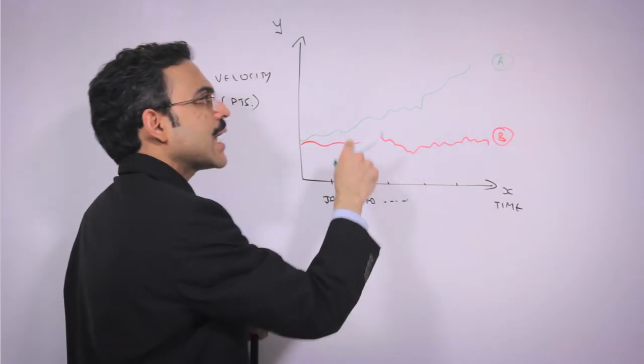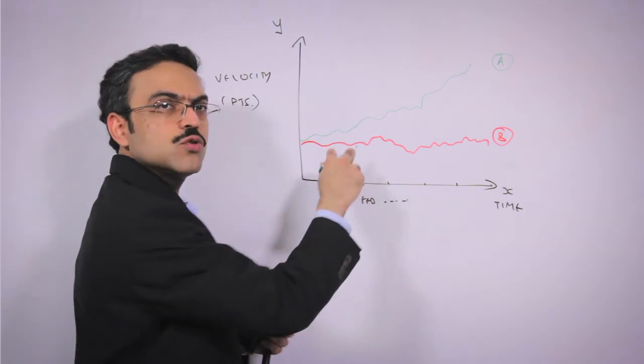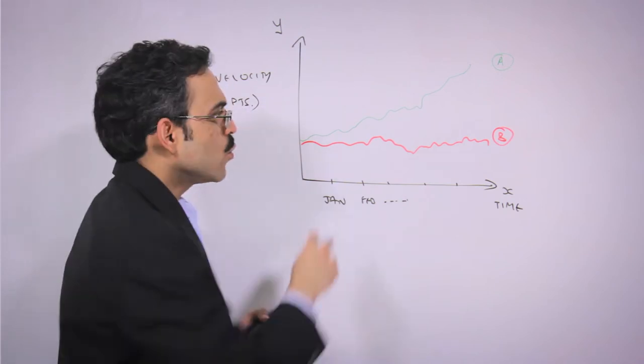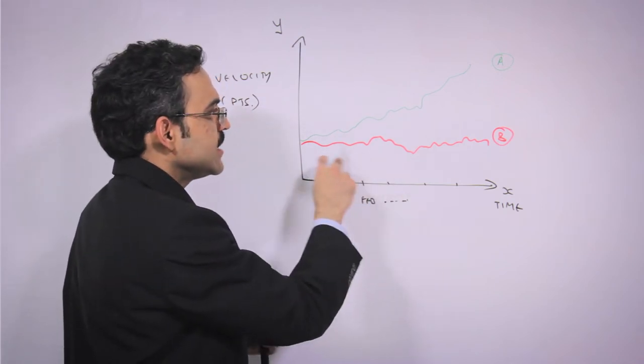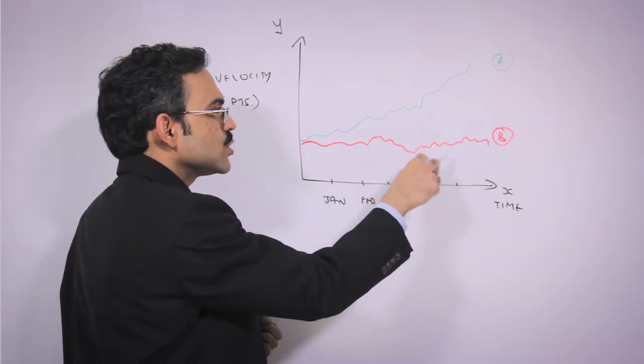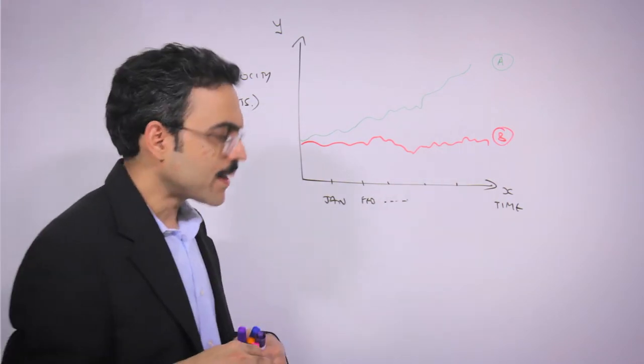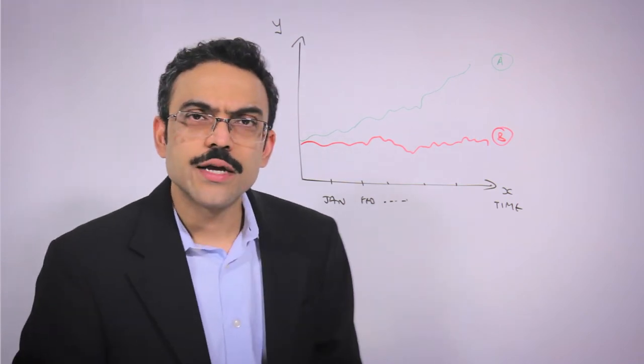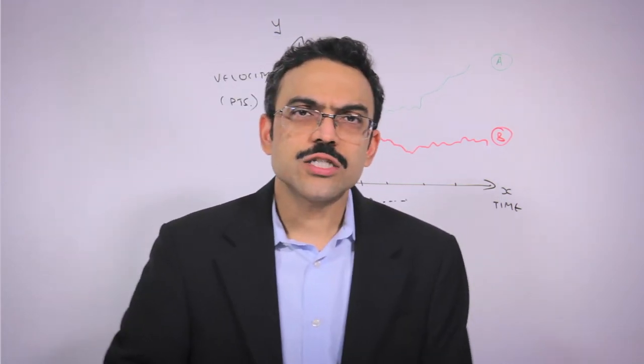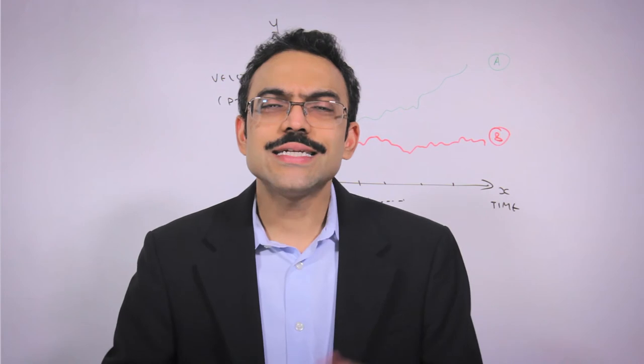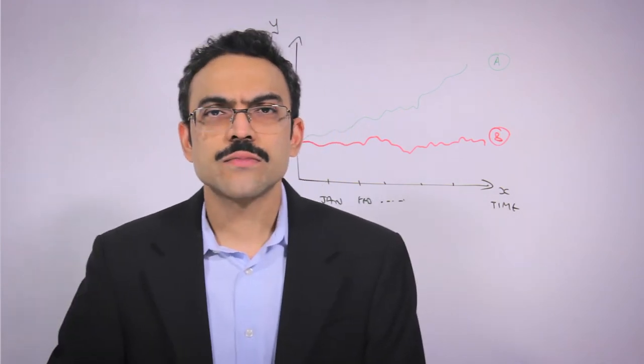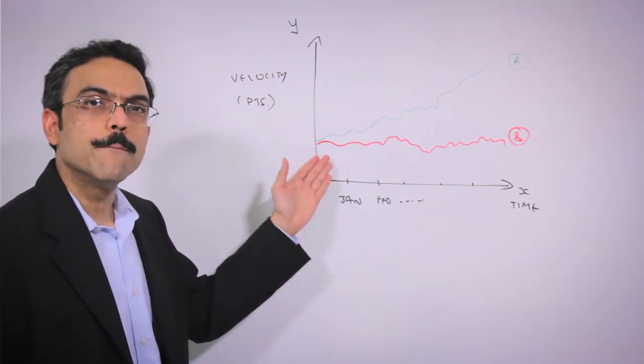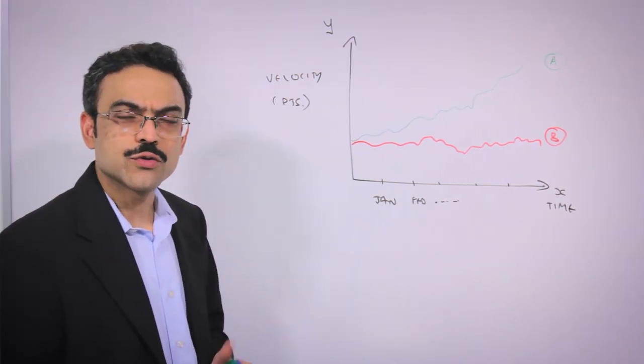It looks like team A is steadily delivering more features every month, whereas team B is either flat or there are sometimes when the number of features delivered by team B are actually going down. Let me ask you a question. Based on this picture, which team is more agile, which team is more successful, and which team is delivering more business value to the customers?